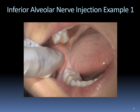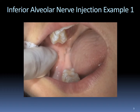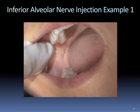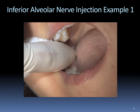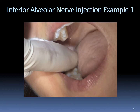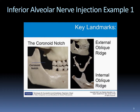Comments about the inferior alveolar injection: Clinicians new to local anesthesia frequently confuse the insertion site for this injection. They often neglect to palpate the internal oblique ridge and believe they are depositing between the internal and external oblique ridges — that is not the case. Be sure to palpate the internal oblique ridge and deposit medial to it. For patients with class III occlusion or a prognathic mandible, insert approximately one centimeter higher. For children, insert at the level of the occlusal plane.